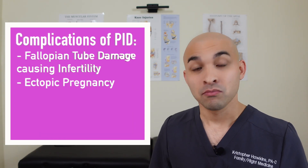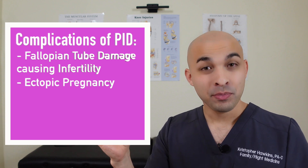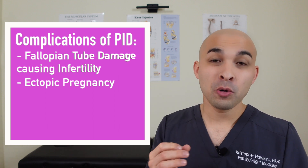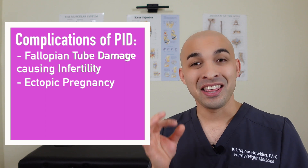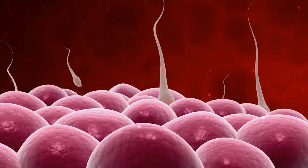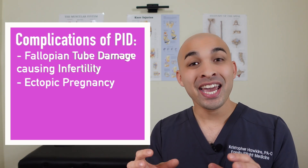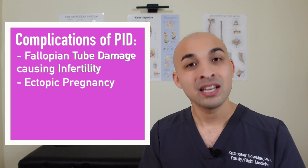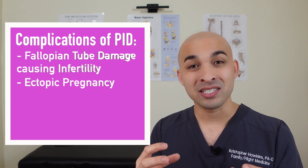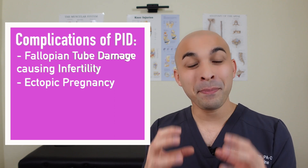The next complication is ectopic pregnancy. This is when the egg from the ovary travels through the fallopian tubes toward the uterus, but gets trapped in the fallopian tube, gets fertilized by sperm, and ends up growing there. That is not a viable pregnancy — the egg must implant in the uterus. The growing embryo in the fallopian tube causes extreme pain and is a life-threatening emergency.